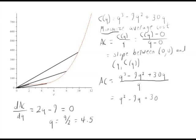In other words, our average cost, if this tells us the cost of creating a bunch of items, our average cost will be the lowest when q equals 4.5. And there are two ways to see that.